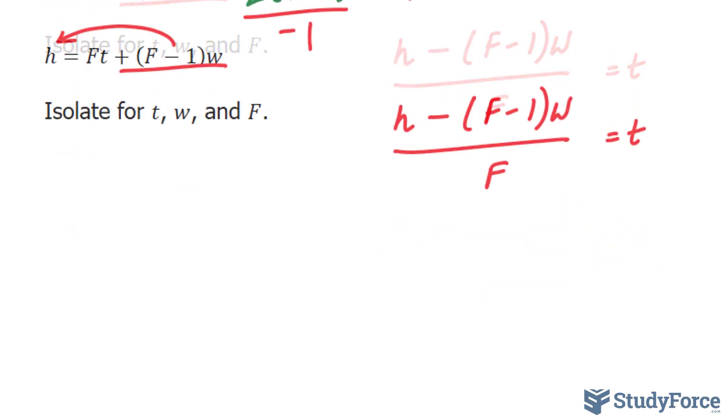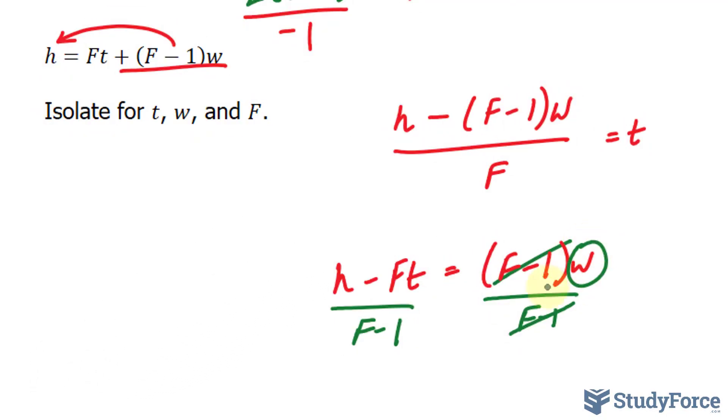If we want to solve for W, we bring Ft over H minus Ft is equal to F minus 1 times W, and divide both sides by F minus 1. Notice now we only have W left.